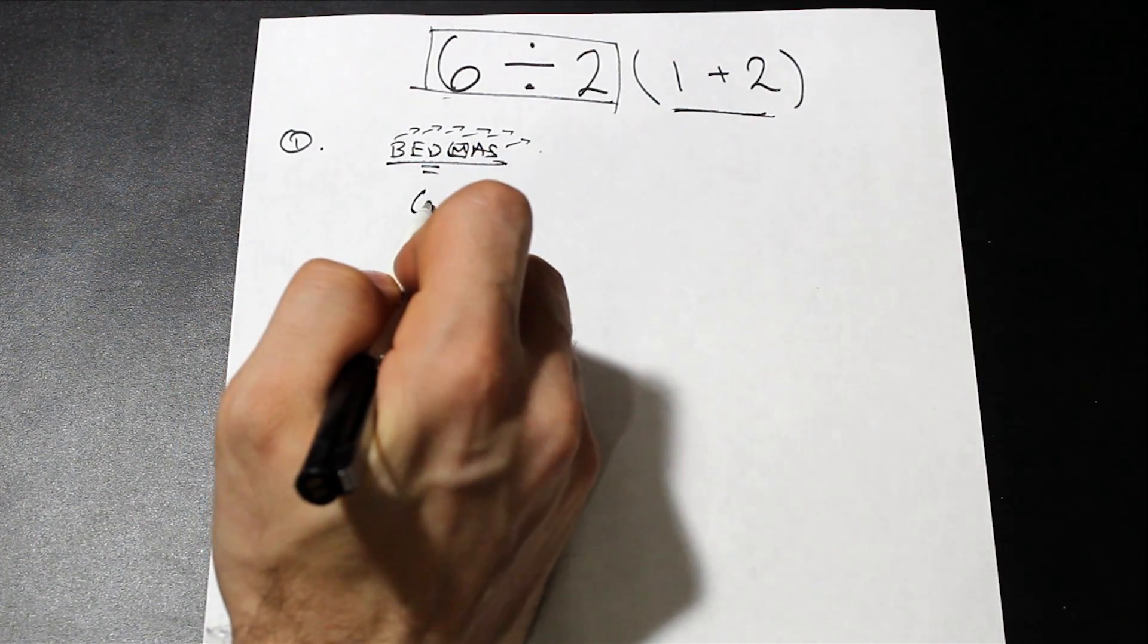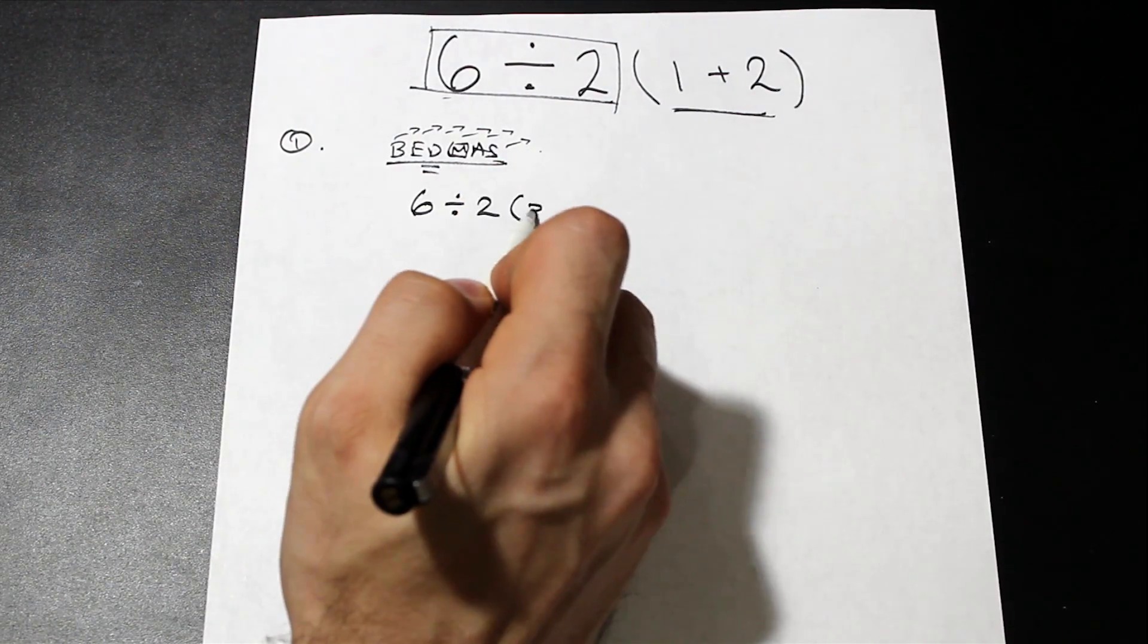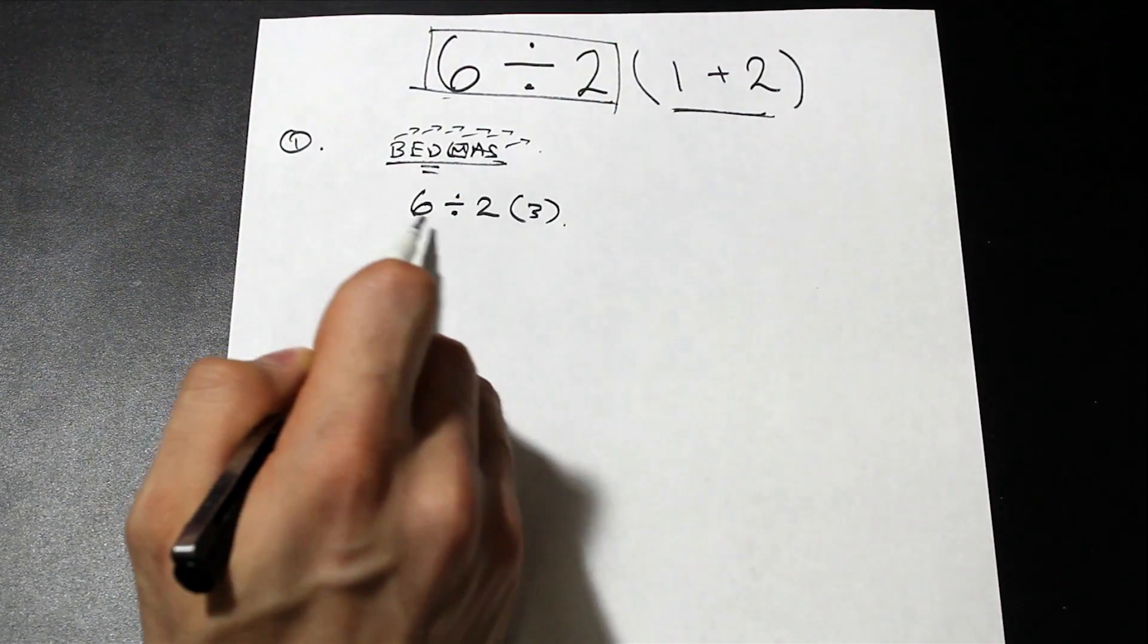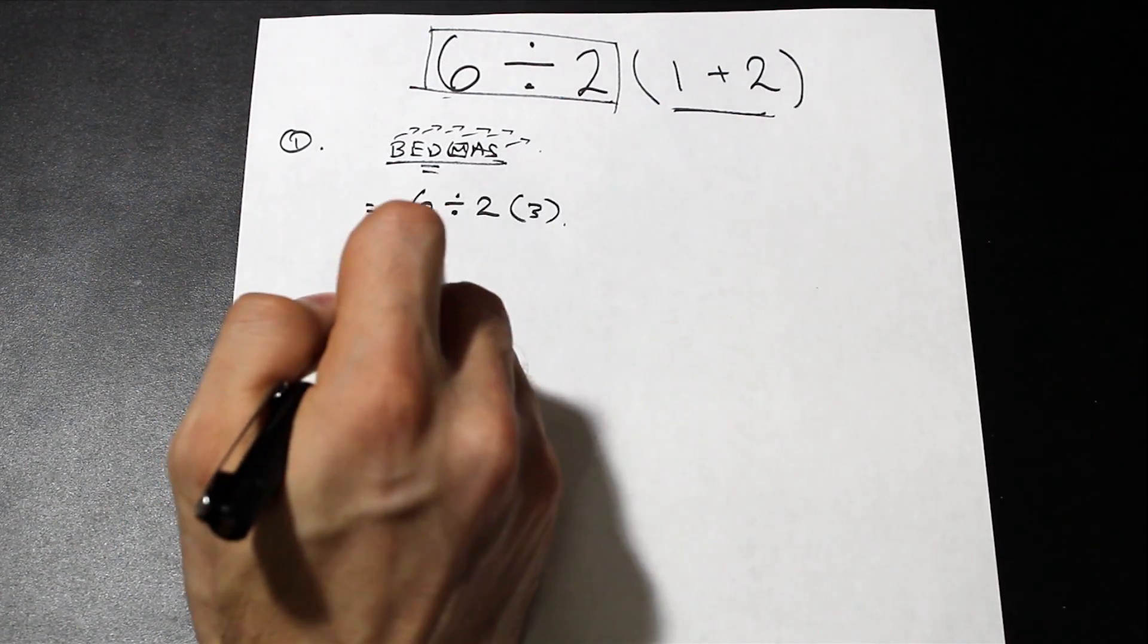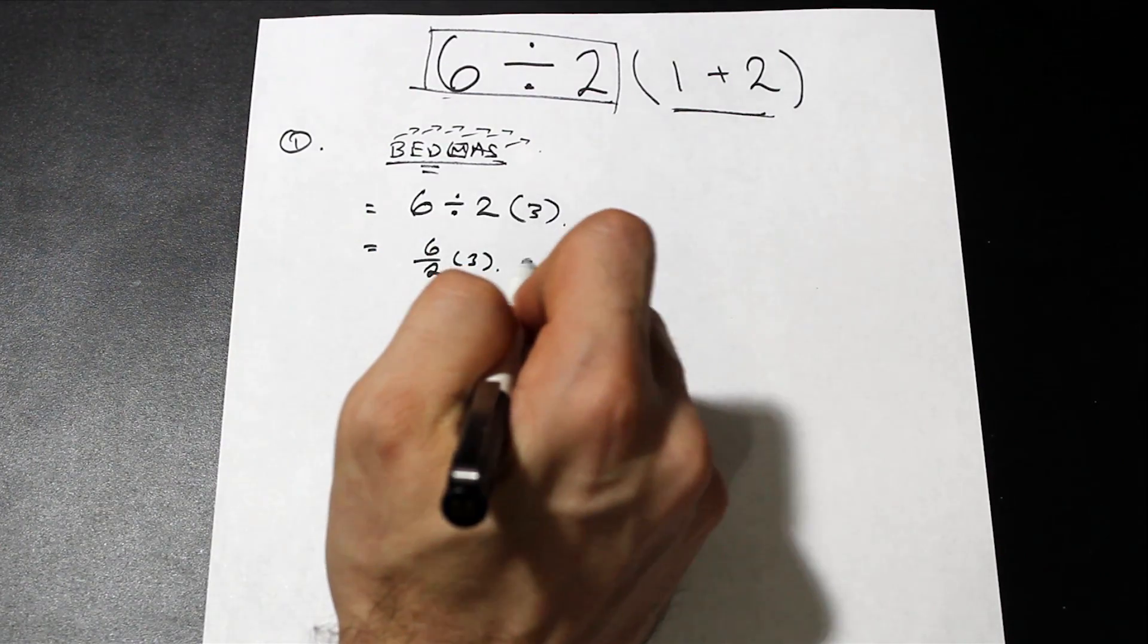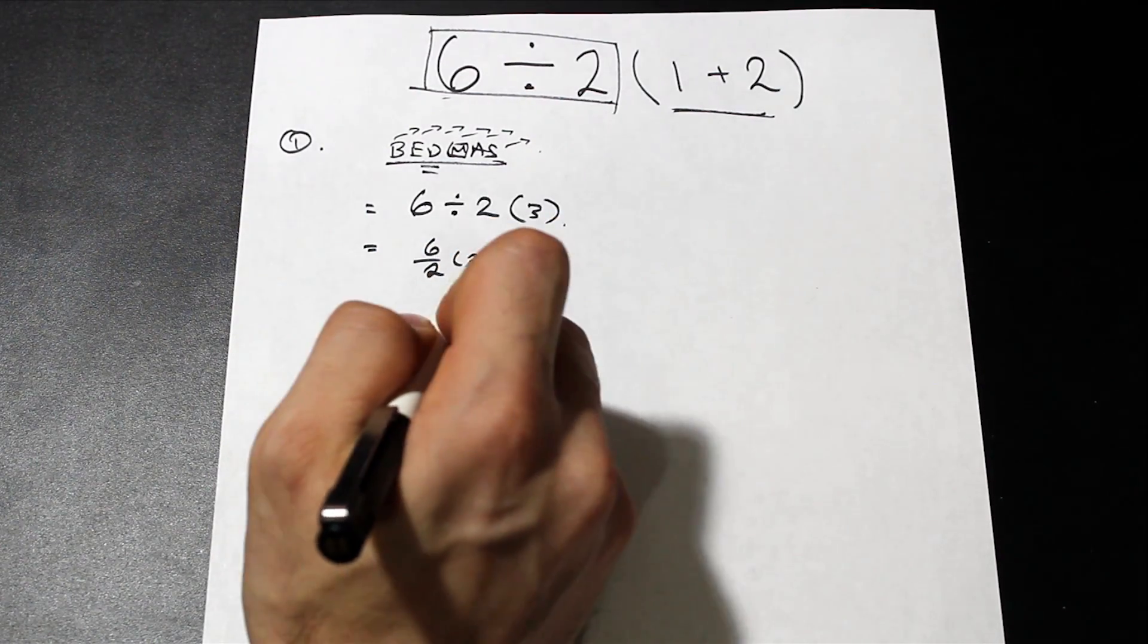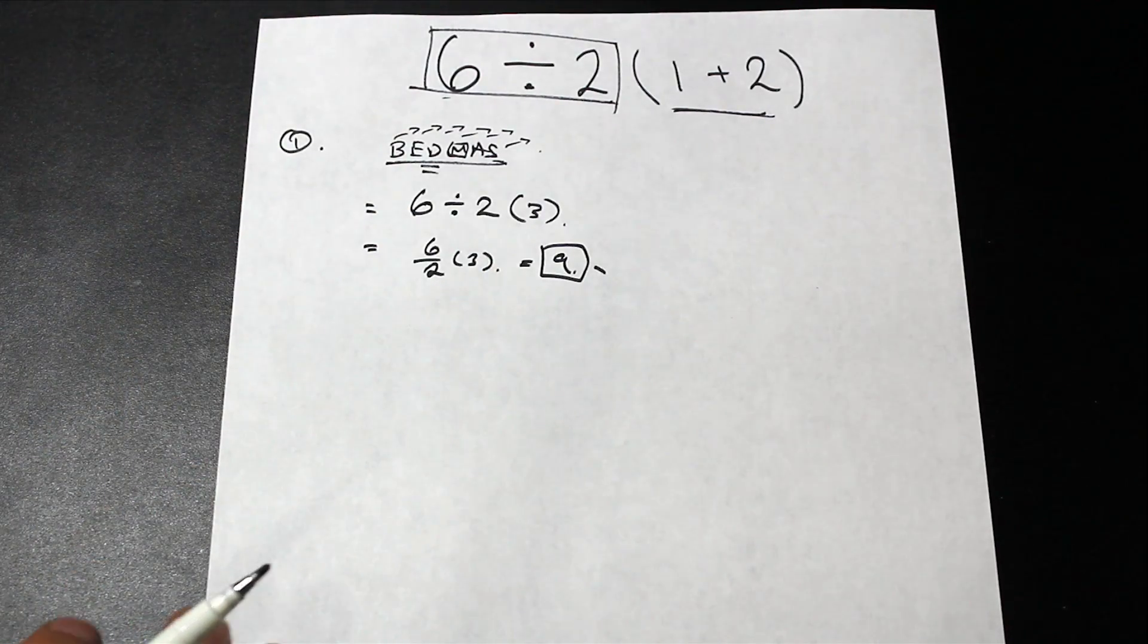Let's do the brackets first. We're going to have six divided by two, and one plus two gives us three. If we go ahead and do this division, we're going to have six divided by two times three, which equals three times three, which is nine. So that's probably what Wolfram Alpha did.